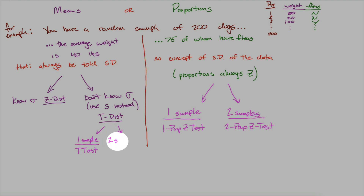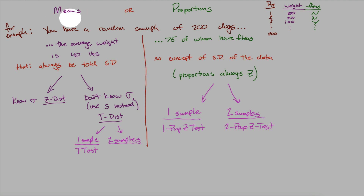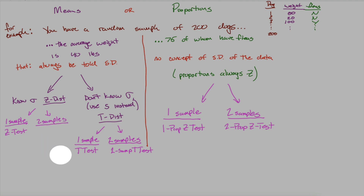If you have two samples for means — say a sample of 200 men with average height 5'10" and a sample of 300 women with average height 5'7" — instead of a t test you use a two sample t test. In theory with a z distribution you could use a two sample z test, but in this class we didn't cover that. If we had two samples we assumed a t distribution.